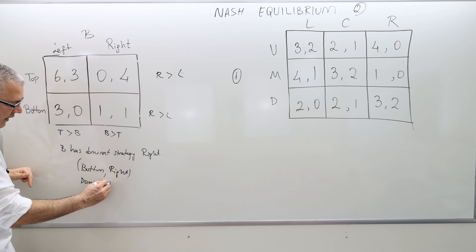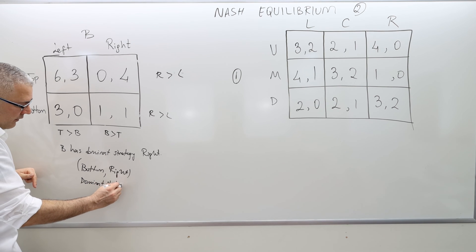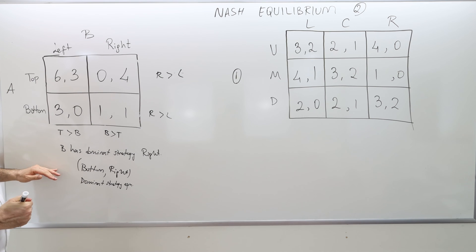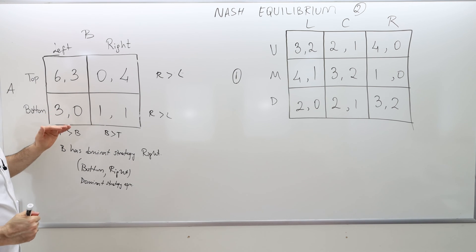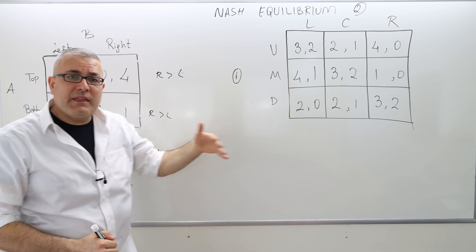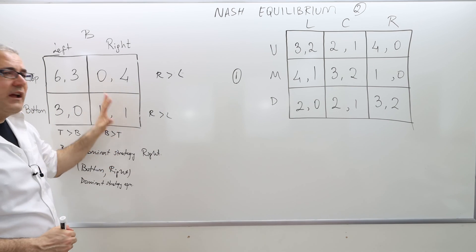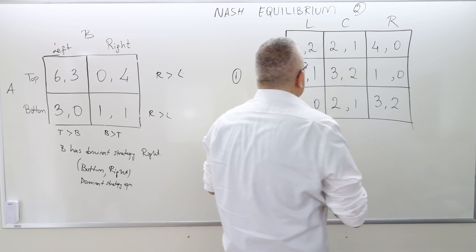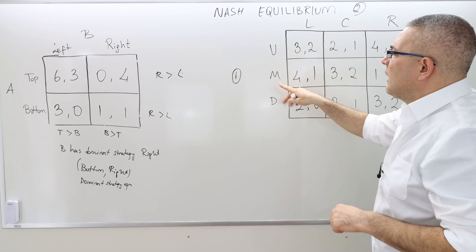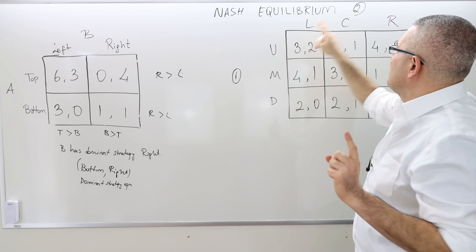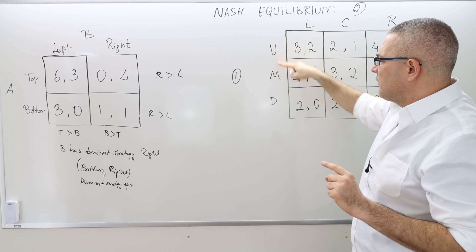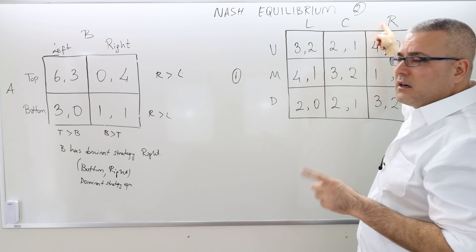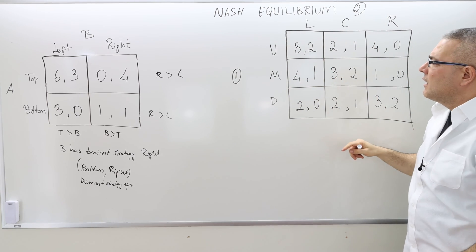We're done — we solved this. But now let's look at this second game, and then I will come back and find the Nash equilibrium of this game. In this game, I have two players, player 1 and player 2. Player 1 has three actions, player 2 has three actions: U, M, D and L, C, R. This is the payoff matrix.